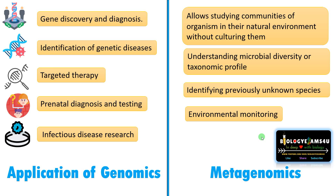Other applications of metagenomics include environmental monitoring — studying the population of microbes with a changing environment, for example at different seasons or when exposed to a pollutant. In ecology, the gut microbiome of a healthy individual can be compared to that of a disease condition to understand changes in microbial communities.